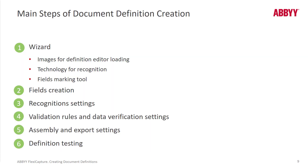The main steps of setting up a document definition: when you create a brand new doc def, a wizard is launched. It asks you to bring in a sample image for that doc def, and then specify the technology for recognition — is this going to be a handprint form or machine print? For a fixed form, you're given tools to indicate the areas you want to capture. For semi-structured and unstructured forms, you use FlexiLayout Studio to find that data, then go about creating fields.